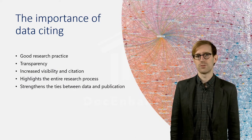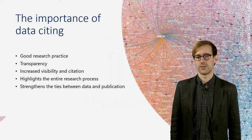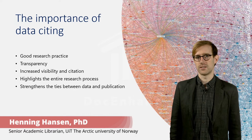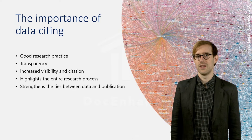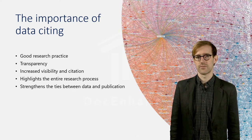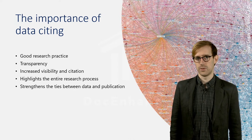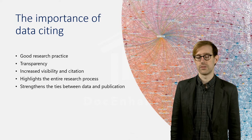Citing research data is an important part of the research process since it fosters good research practices and is crucial for achieving transparency. Getting cited also creates an incentive to share data, which leads to positive reinforcement and in turn strengthens the research community in general and the open science community in particular. It is just as important to properly cite research data as when using any other kind of source, and just like any other source, the cited data should be included in the list of references.